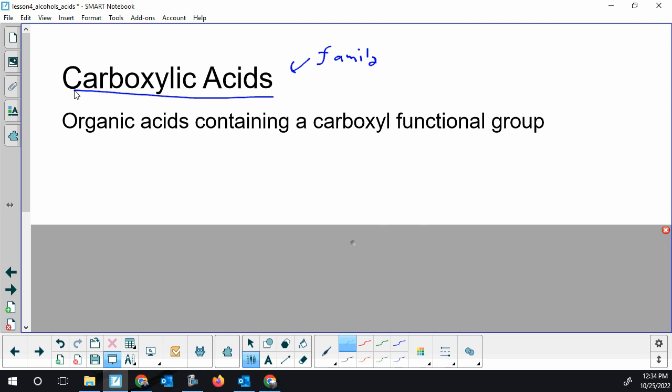We had hydroxyl functional groups in alcohols, and we have a carboxyl functional group. You've seen this before, you maybe just weren't used to the name. Carboxyl groups make an acidic piece to a compound. So a carboxyl group has a C double bonded O, and then a hydroxyl group.